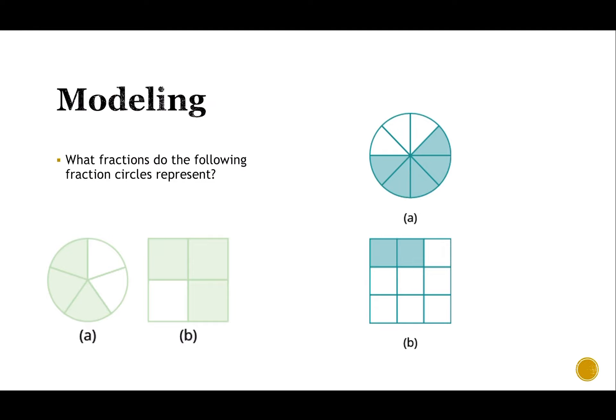Here I've got a pie. It's cut into one, two, three, four, five pieces, and three of them are shaded. So this would be like three-fifths. Think of it kind of like a pizza. Here I've got a box. It's broken up into fourths, and three of them are shaded. So this would be three-fourths.